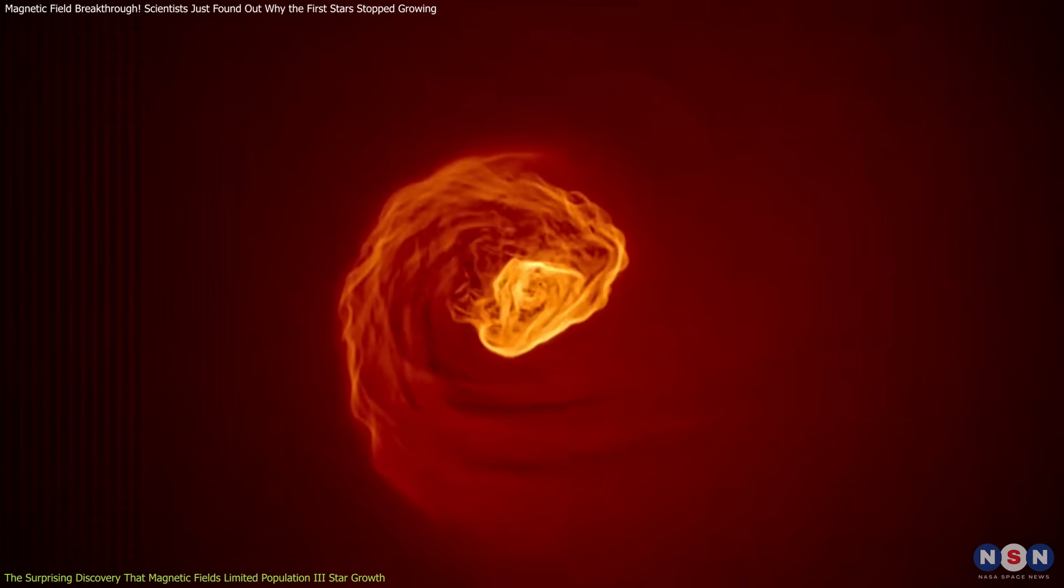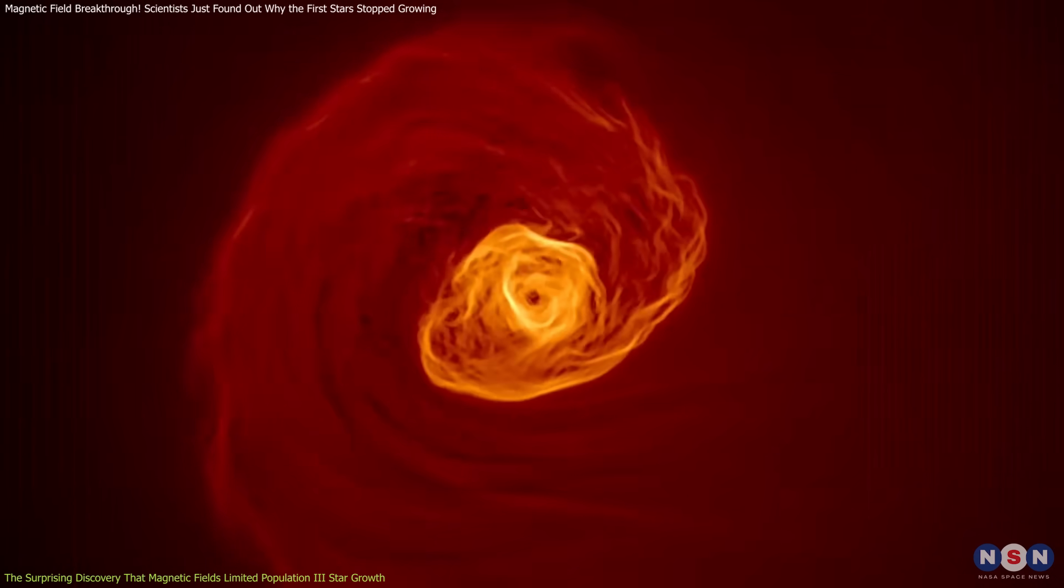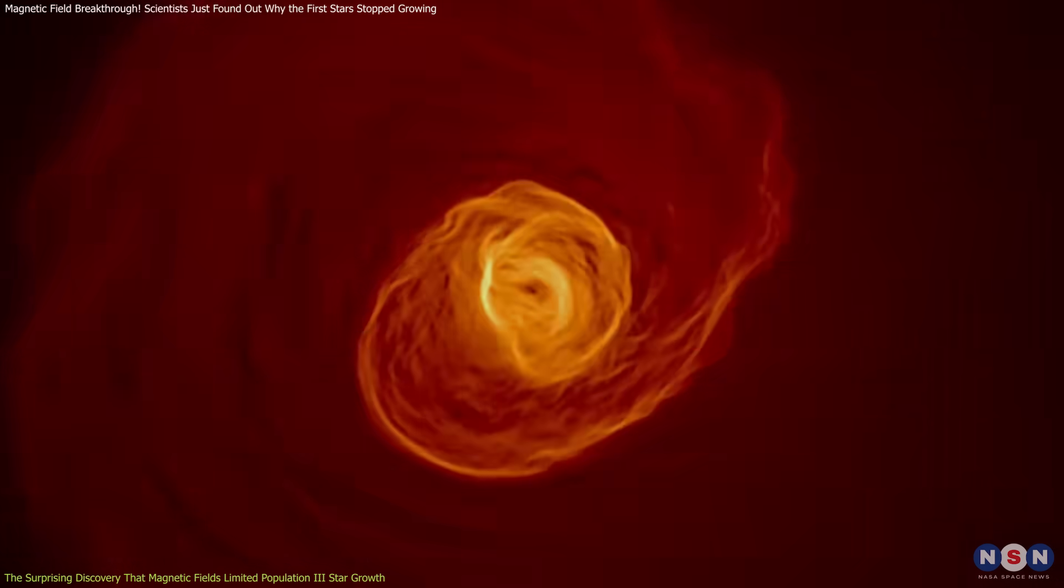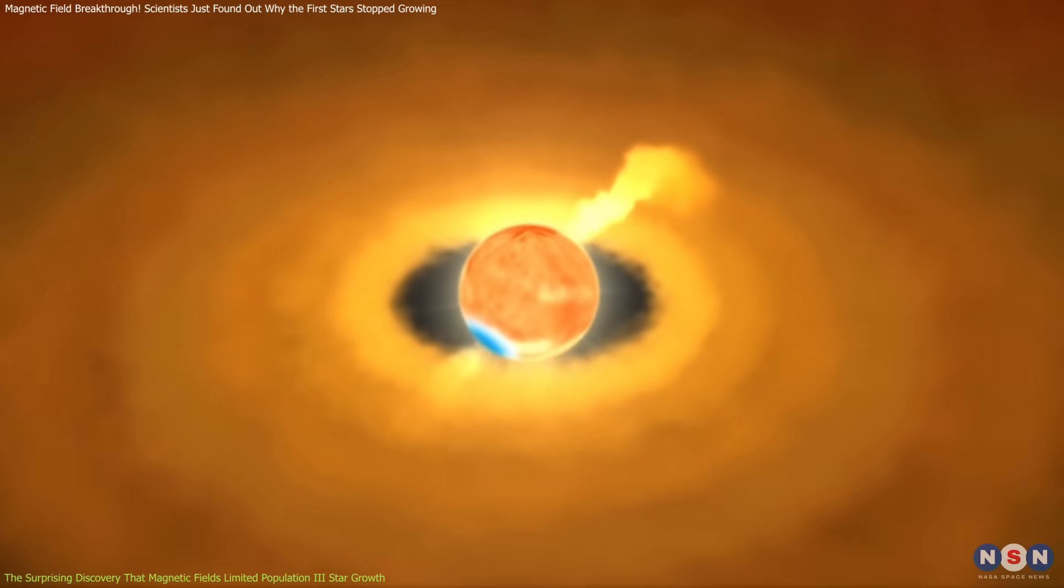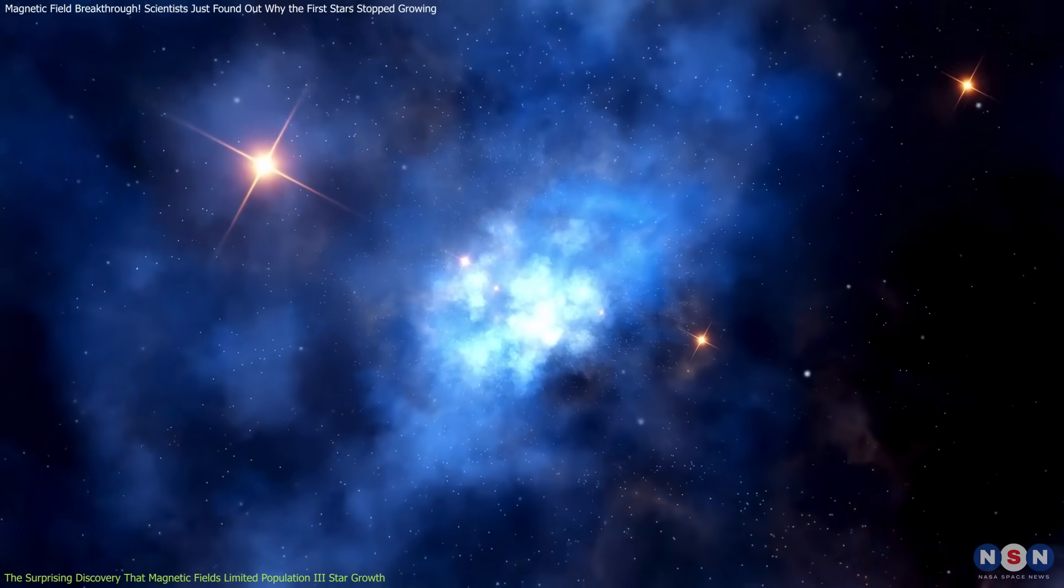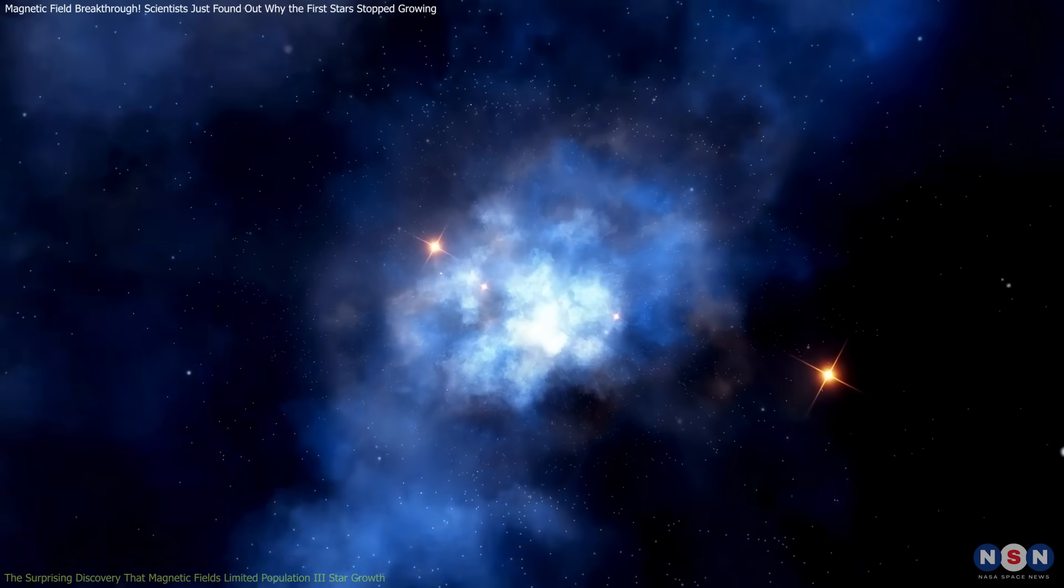This finding rewrites the story of early star formation. Instead of growing indefinitely, magnetic fields were already capping Population III stars at around 65 solar masses, shaping their evolution in ways previously unaccounted for.